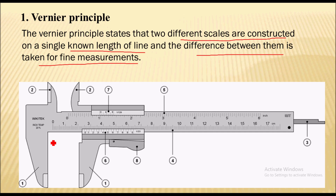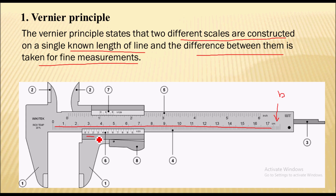Here you can see a vernier caliper. There are two scales on it. This scale is the main scale that is present on the beam, and this is the vernier scale that is present on the vernier slide. The main scale is the larger scale of the vernier caliper, and the vernier scale is the smaller scale.